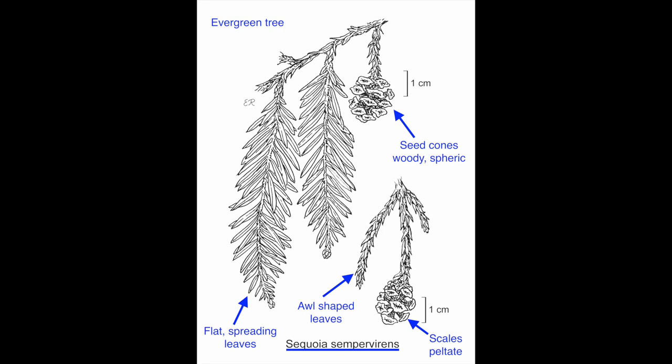Let's review. This evergreen tree is a dominant species in redwood forests. The species occurs from southwestern Oregon to Monterey County. They have two types of leaves: flat, spreading, and two-ranked, and all-like. Their cones are woody with peltate scales that are fused to the bracts.